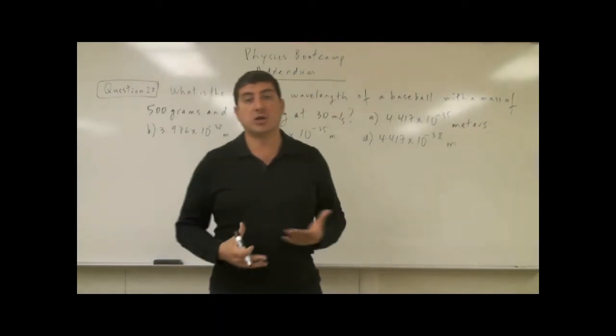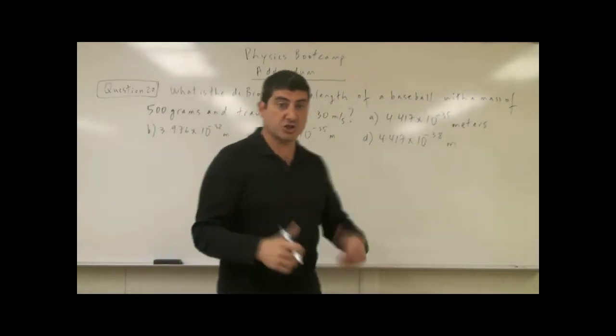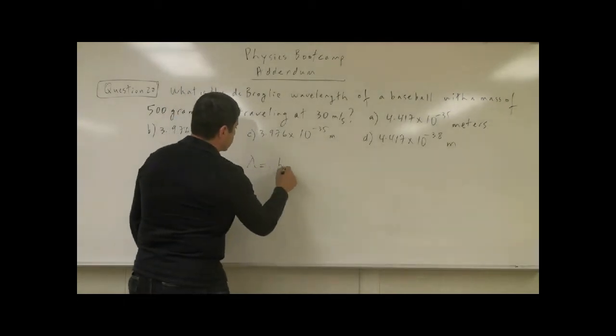How de Broglie said that all objects also have a wave nature, and their wavelength is equal to Planck's constant h.